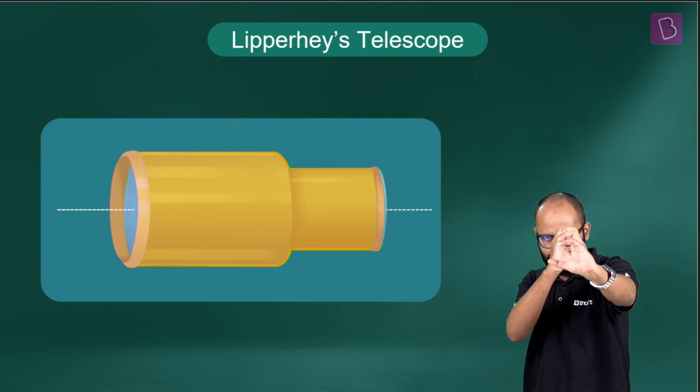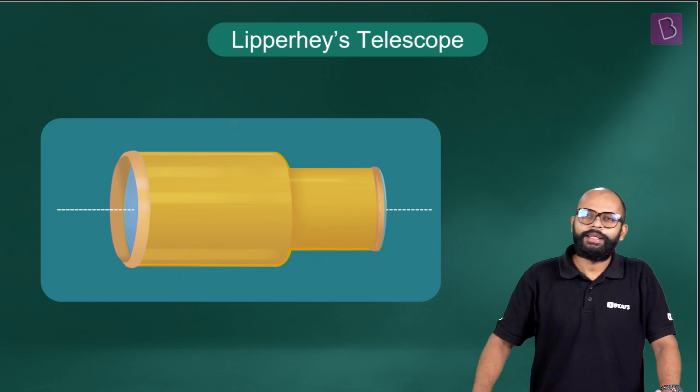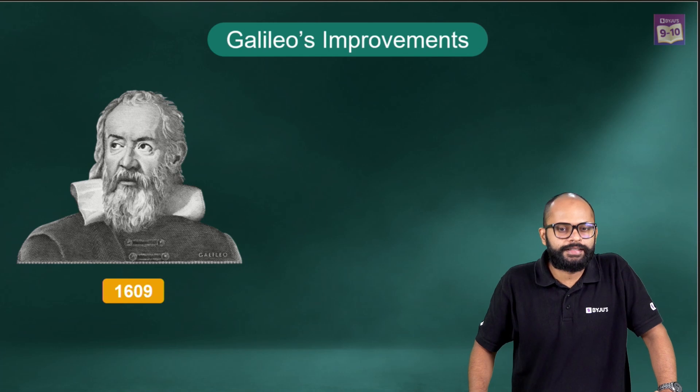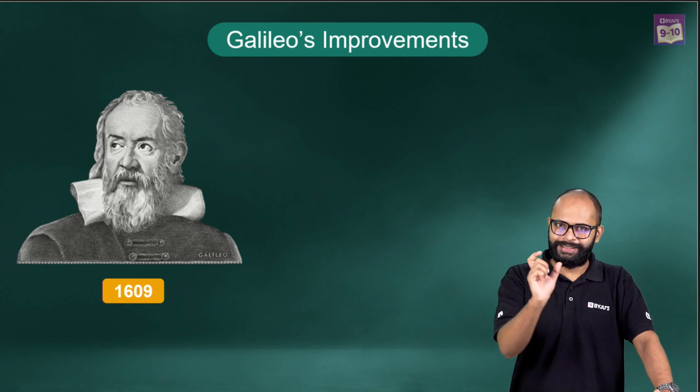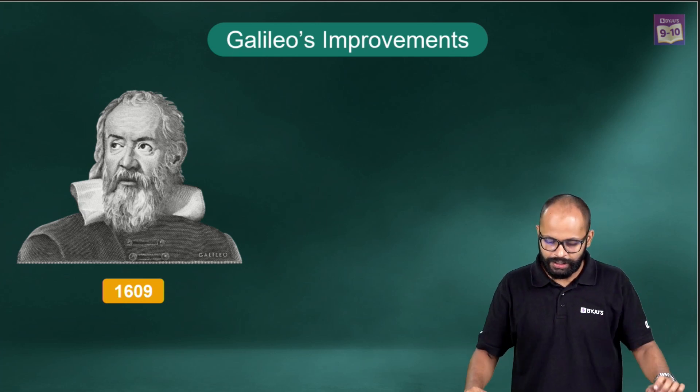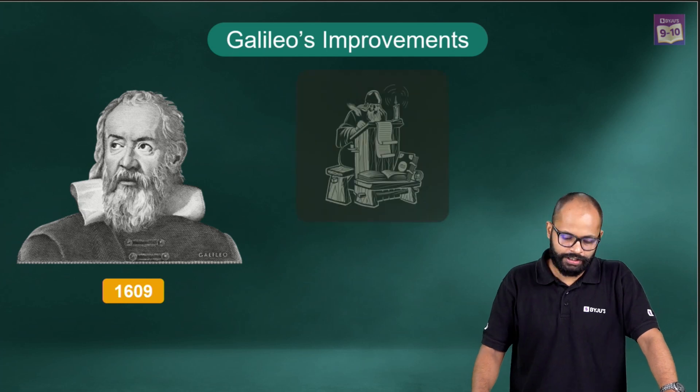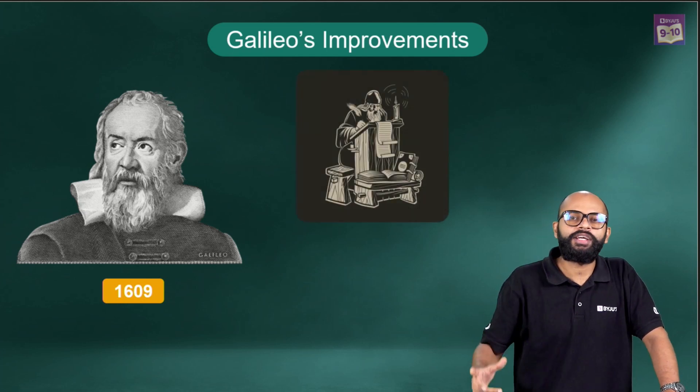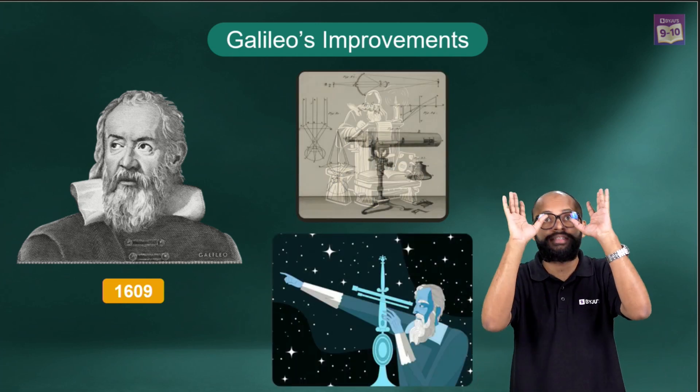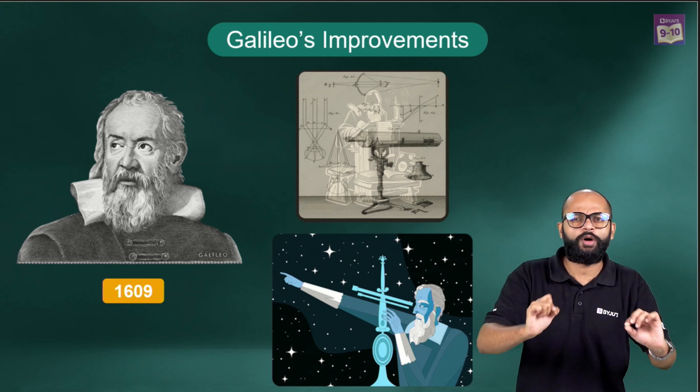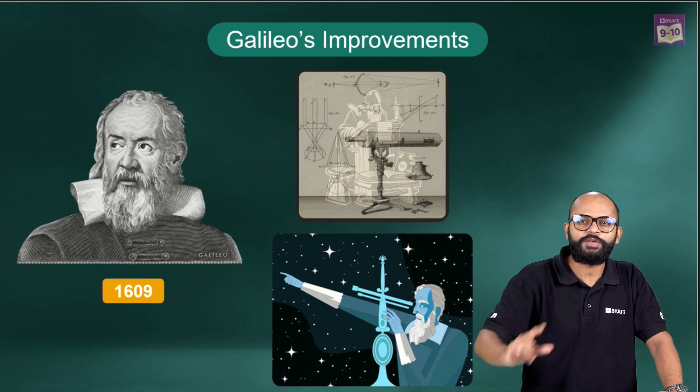Galileo modified this design. He made changes and created a more powerful telescope which was able to give images of stars, far objects, different planets, and moons of Jupiter. Pretty impressive.